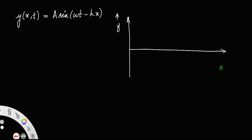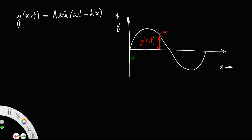Consider a wave where this is the y-axis for the vertical displacement and this is the horizontal displacement. Suppose p is any point on the wave — this vertical displacement is y(x,t), where x is the horizontal displacement. For convenience let us write y(x,t) as y, so y = a sin(ωt − kx).